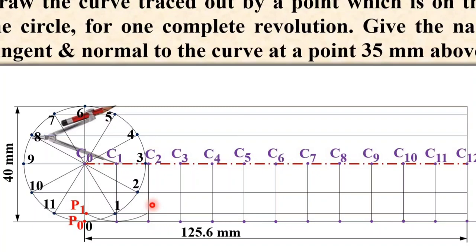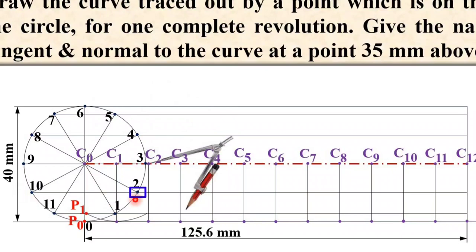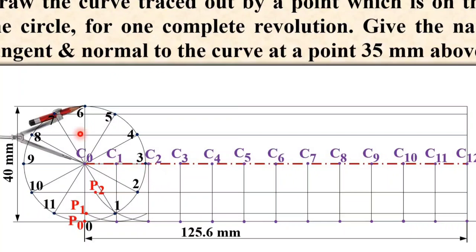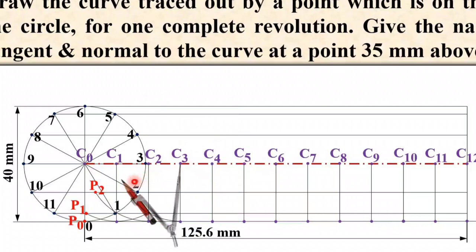Repeat the same step with the same radius. Now your center is C2 — same radius, take C2 as the center and draw the arc on the horizontal line passing through point 2. You will get the intersection point — mark it as P2. Next, with the same radius, take C3 as the center and draw the arc on the line passing through point 3, which is on the center line. Draw the arc and mark the intersection point as P3. Similarly, find P4 with C4 as center.